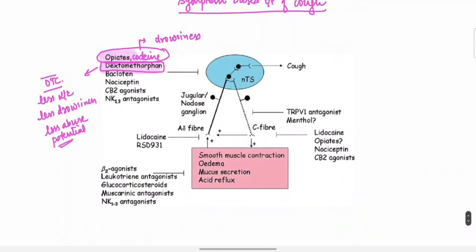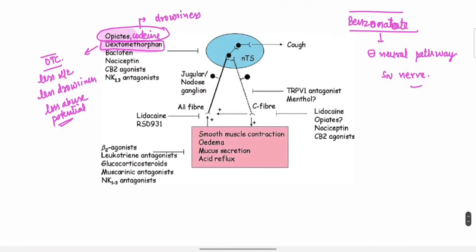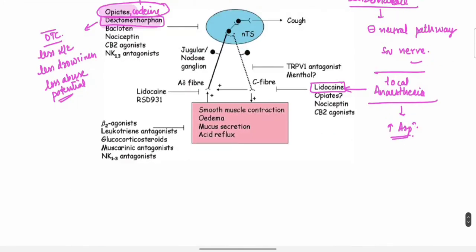Another drug is benzonatate. Benzonatate inhibits the neural pathway, the sensory node, in the cough reflex pathway. We can also use inhaled lidocaine, but the side effect is it causes local anesthesia, which will increase the chances of aspiration.